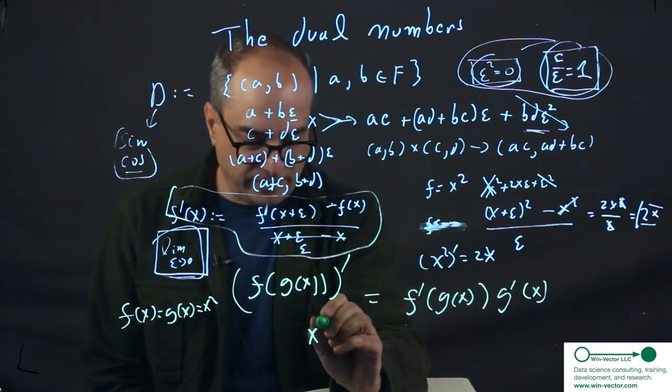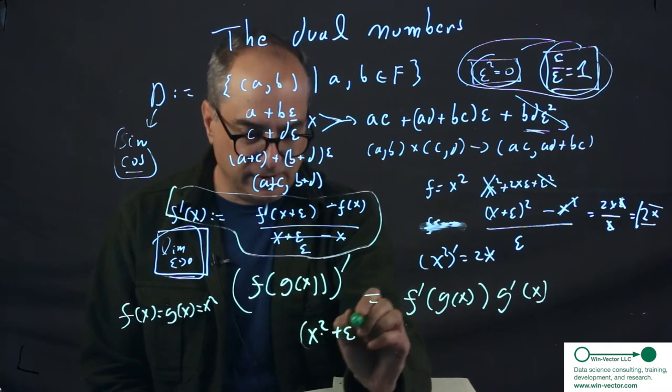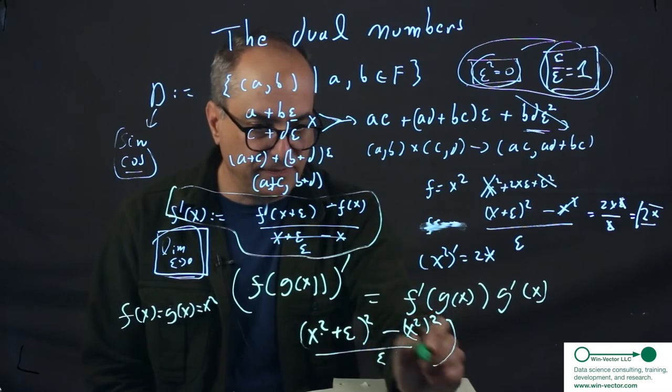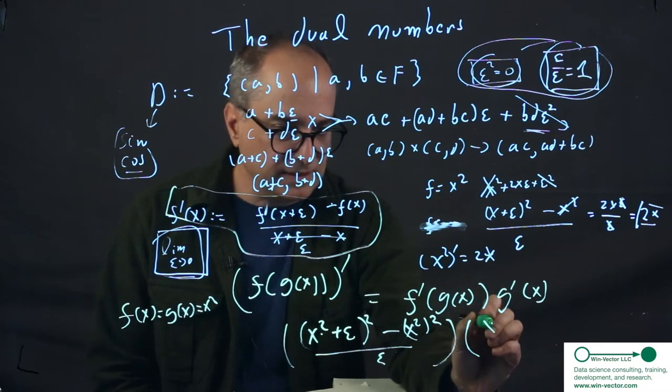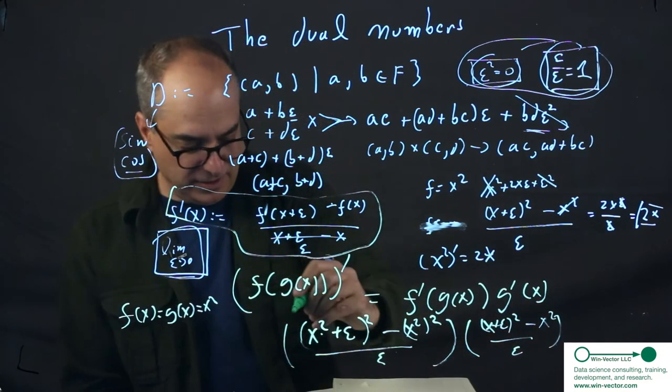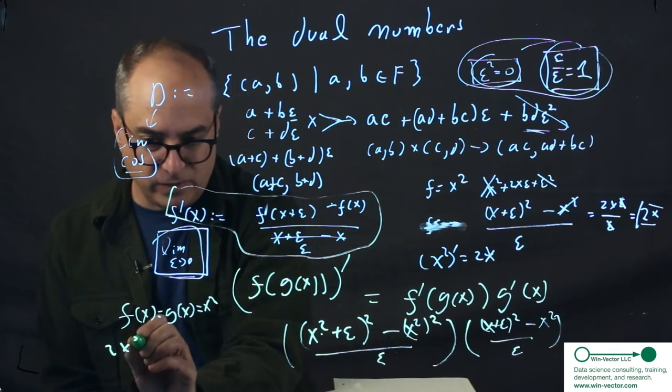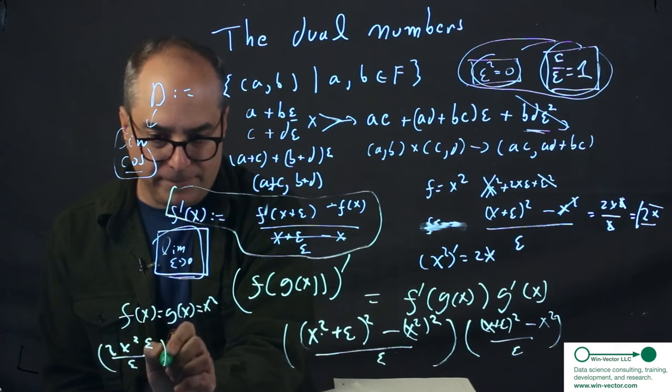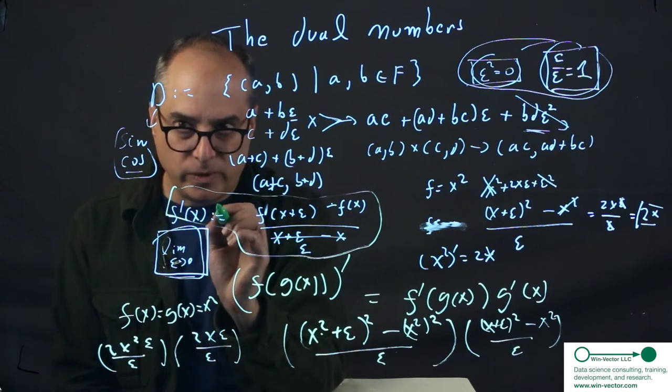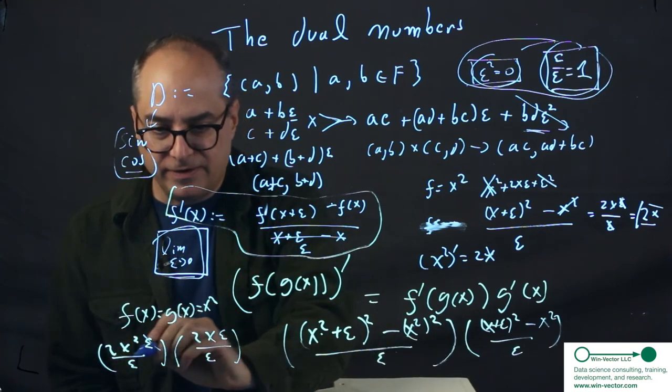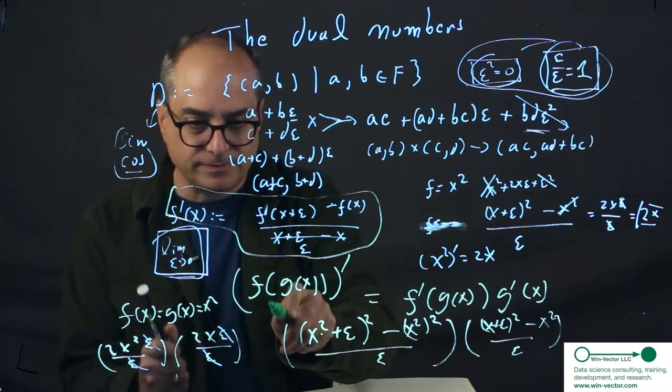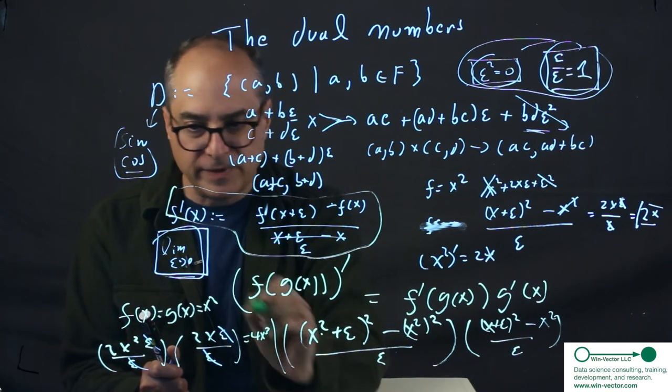So this would be [(x²+ε)² - x²] / ε times [(x+ε)² - x²] / ε. That simplifies into [2x²ε / ε] times [2xε / ε]. If we are careful and clear the epsilons first before combining these two fractions, before multiplying, then we get 4x³, which is the right answer. That is the derivative of x⁴.